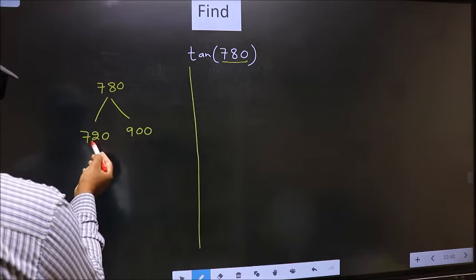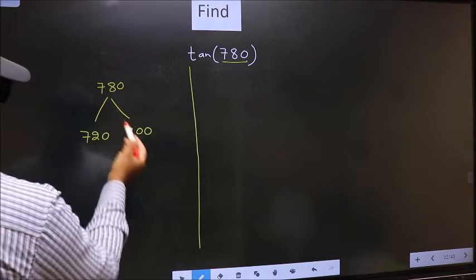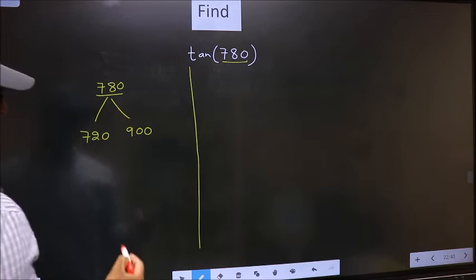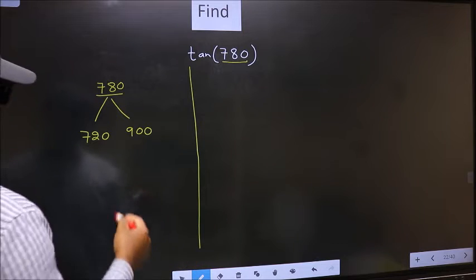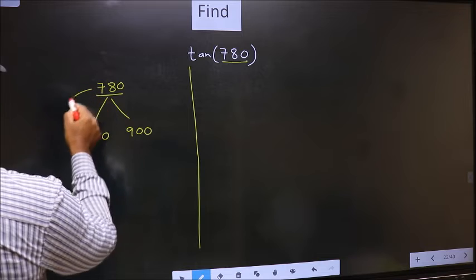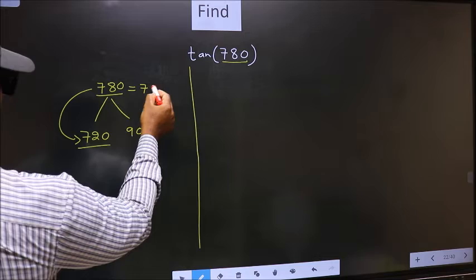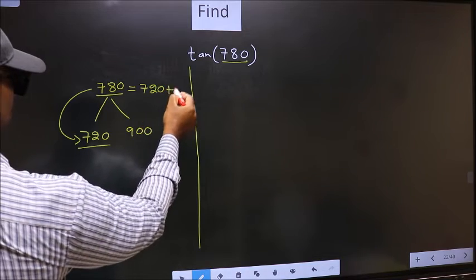This is 180 times 4 and this is 180 times 5. Between these two numbers, 780 lies. Next, 780 is close to which number? This is close to 720. So in place of this, now we should write 720 plus 60.